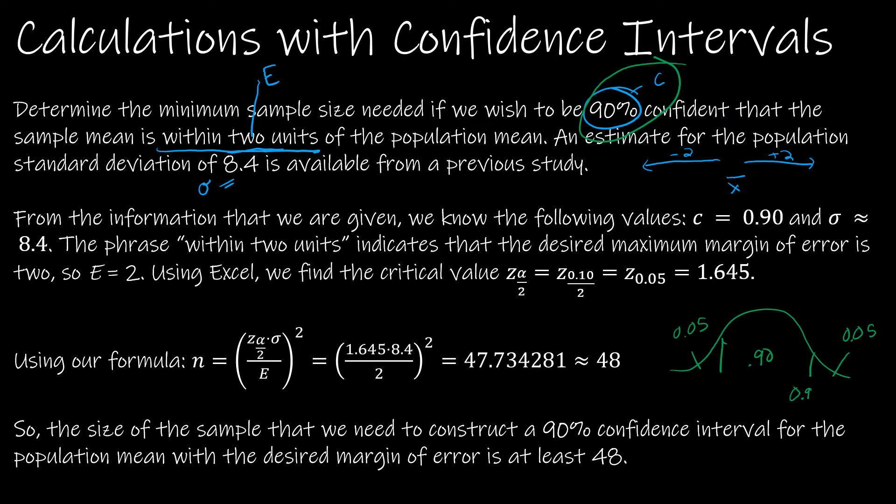So what am I putting into Excel? Well, this guy right here is 0.95. And so that's what I'm putting into Excel. I'm saying equals norm S inverse of 0.95. And that's going to spit out 1.645.